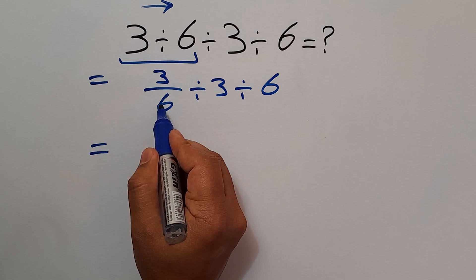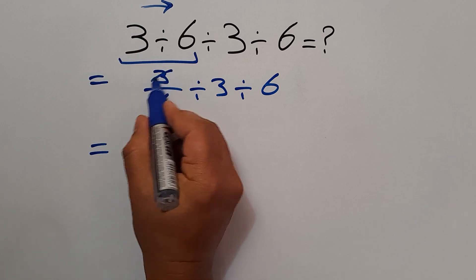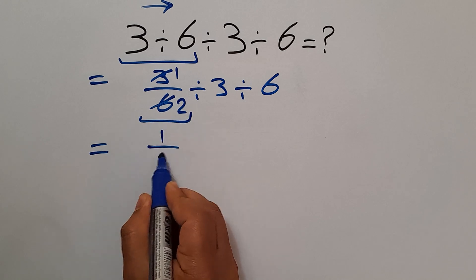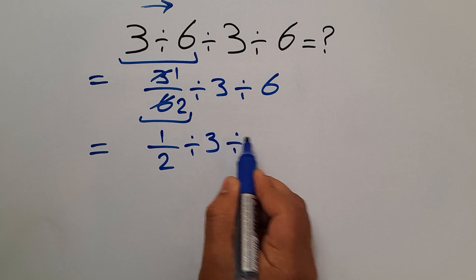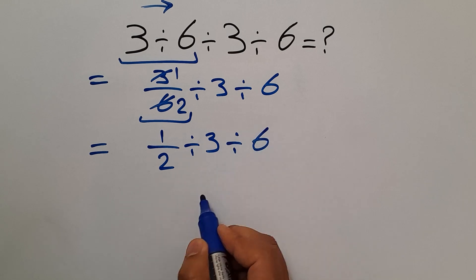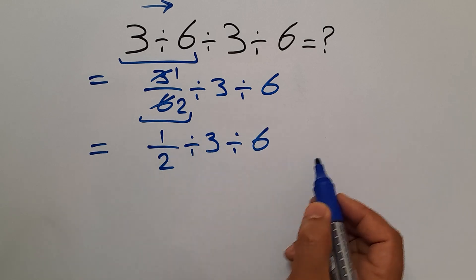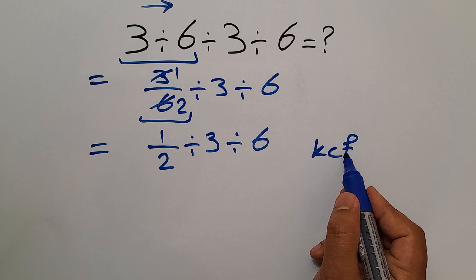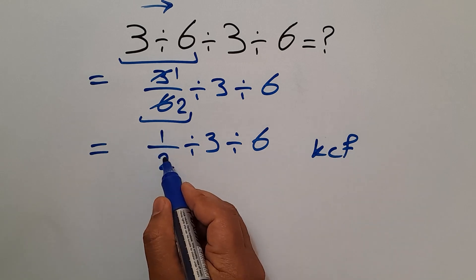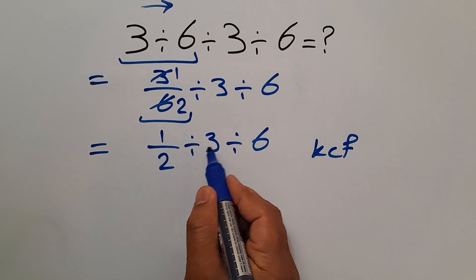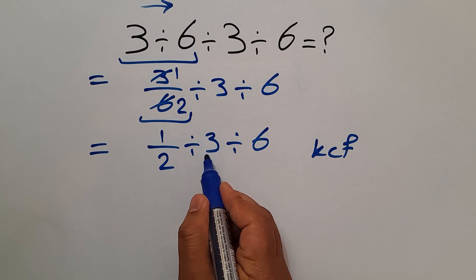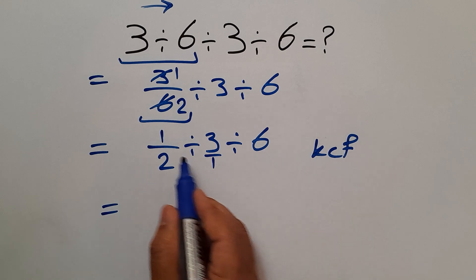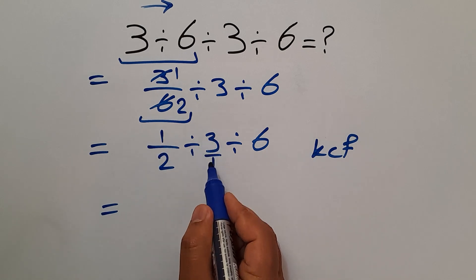3 divided by 6 can be written as 1 over 2. So we have 1 over 2 divided by 3 and divided by 6. According to the KCF rule — K stands for Keep, C stands for Change, and F stands for Flip — keep the first fraction, change division to multiplication, and flip the second fraction. Our second fraction is 3 over 1.